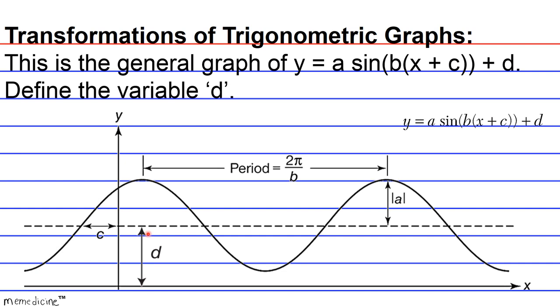Positive values of d translate the function up, which is what we're dealing with here if this was the original position. So our d is positive and negative values of d translate the function down. The midline is the average of the maximum and minimum values of the function. This transformation concept applies to both the sine function as well as the cosine function.